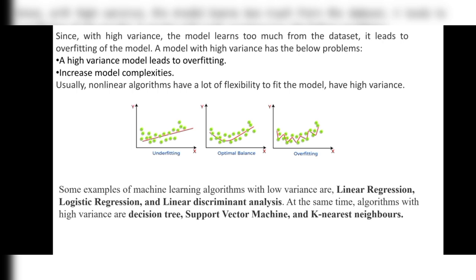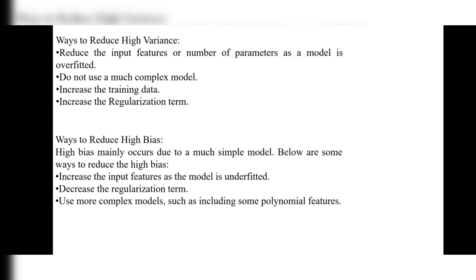Algorithms with high variance include decision tree, support vector machine, and K-nearest neighbors. These are examples of high variance and low variance algorithms. Using high variance, we get model overfitting and high complexity.